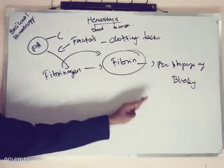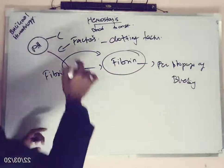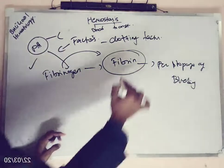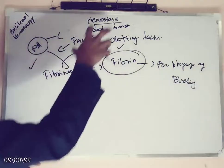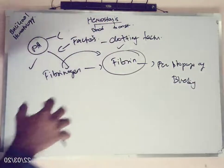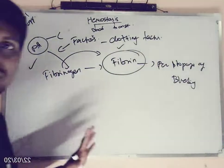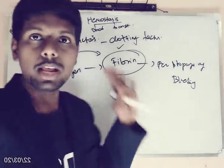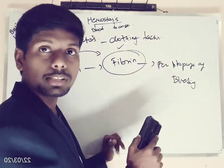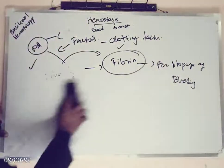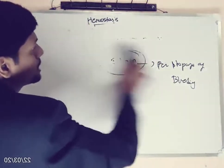In order to stop bleeding, we need two mechanisms. One is we need platelets, and also we need clotting factors to prevent bleeding. This is how hemostasis works. Let me show you the mechanism of hemostasis diagrammatically. Platelets play a crucial role in bleeding, as do clotting factors.